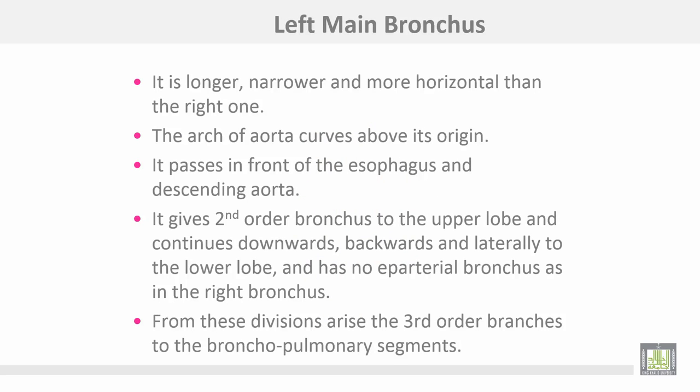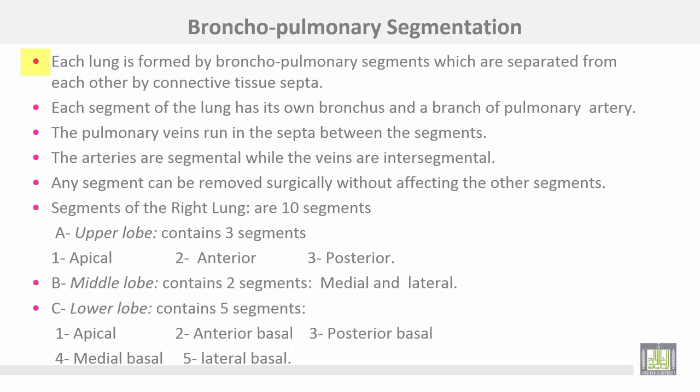The left main bronchus is longer, narrower, and more horizontal than the right one. The arch of the aorta curves above its origin. It passes in front of the esophagus and descending aorta. It gives the second-order bronchus to the upper lobe and continues downwards, backwards, and laterally to the lower lobe. It has no eparterial bronchus as in the right one. From these divisions arise the third-order bronchi to become bronchopulmonary segments. The bronchopulmonary segments are separated from each other by connective tissue septa. Each segment has its own bronchus and branch of the pulmonary artery. The pulmonary veins run in the septa between segments, so pulmonary veins are intersegmental while arteries are segmental. Any segment can be removed surgically without affecting the other segments.